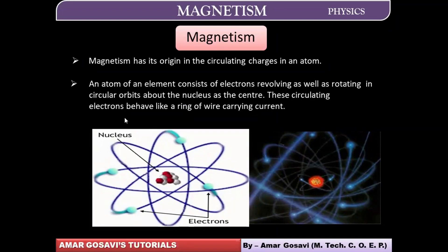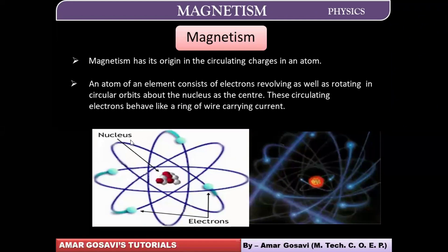These circulating electrons will behave like a ring of wire carrying current. The moment they behave like a current-carrying ring, it's going to introduce a magnetic field around it. That's how we will talk about how magnetism comes into picture out of that magnetic field.